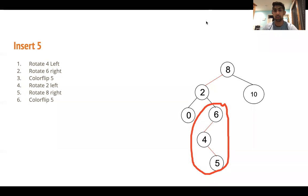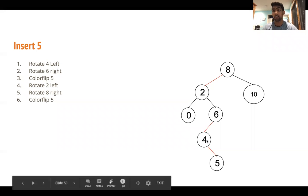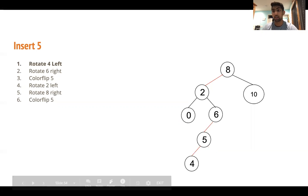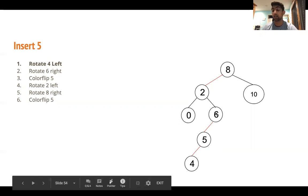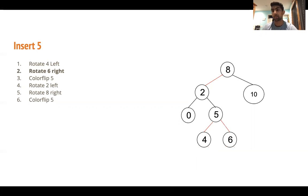To address this, what we're going to do is we're going to first rotate 4 to the left. So if we rotate 4 to the left, now this line configuration should look a little more similar, and what we can do is rotate 6 to the right. So after these two rotations, you'll see that now our subtree is possible to color flip.